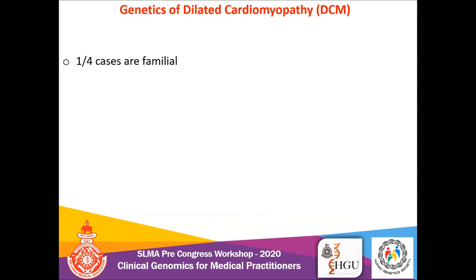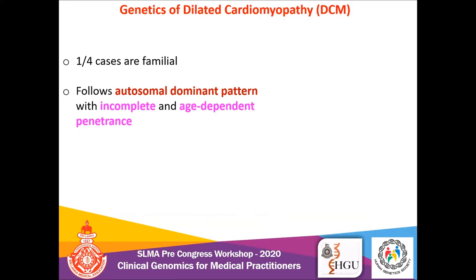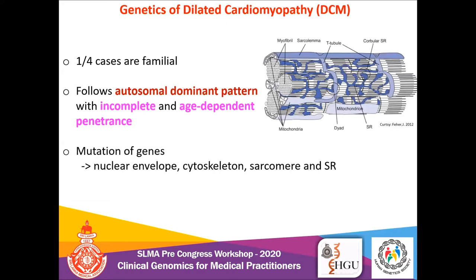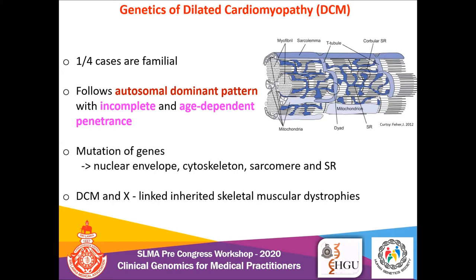In dilated cardiomyopathy, a familial form is present in at least 25% of cases. It is genetically heterogeneous, and in most cases the autosomal dominant inheritance pattern with incomplete and age-dependent penetrance is observed, though autosomal recessive and X-linked recessive forms are also reported. It is caused by mutations in genes related to the nuclear envelope, cytoskeleton, sarcomere, and sarcoplasmic reticulum of cardiac myocytes. DCM is also a common complication of neuromuscular disorders, the classical example being Duchenne muscular dystrophy.